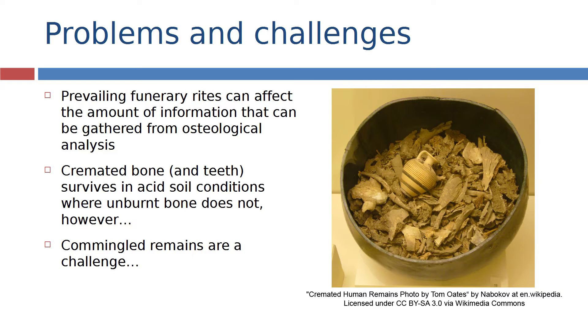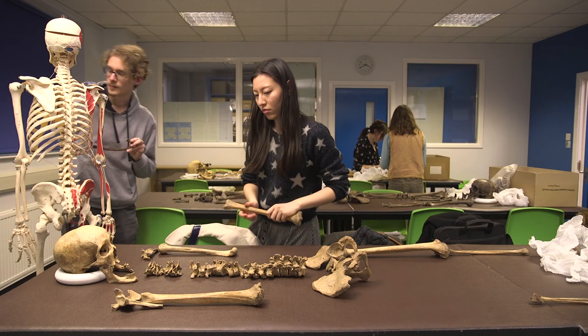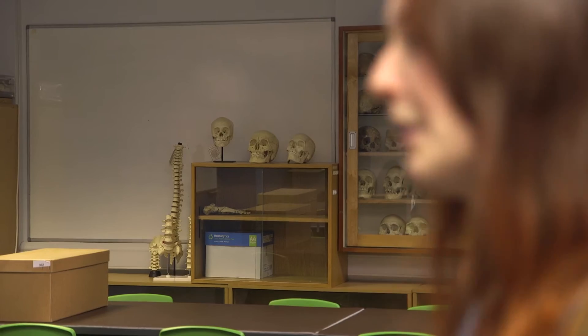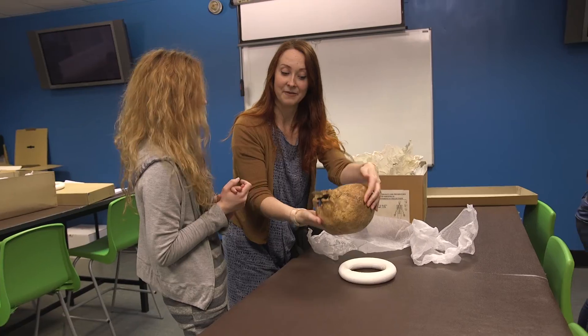It's worth pointing out also that commingled remains where different parts of different people are mixed together are particularly challenging for us because for example if we want to determine biological sex we may want to look at the pelvis and we may want to look at the skull but if we don't know whose skull belongs to whose pelvis then that's going to cause a problem.